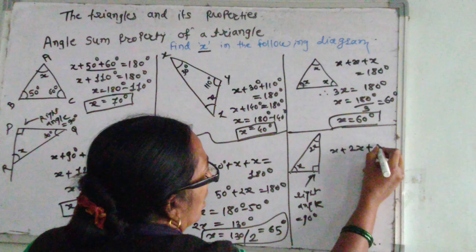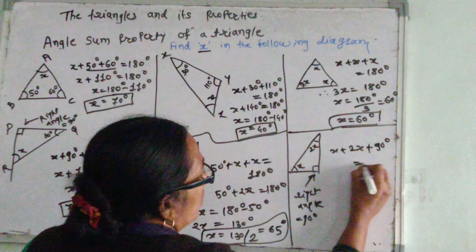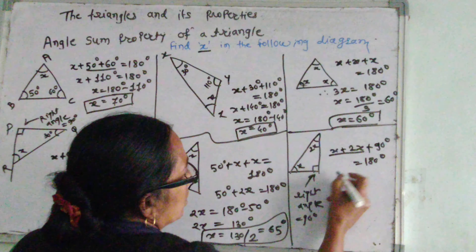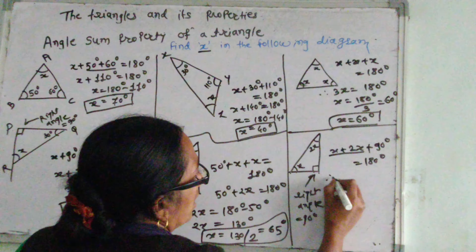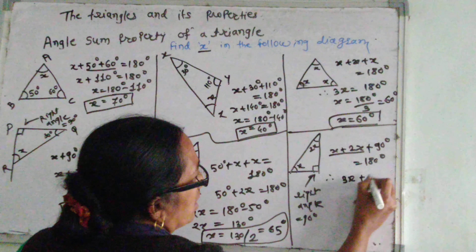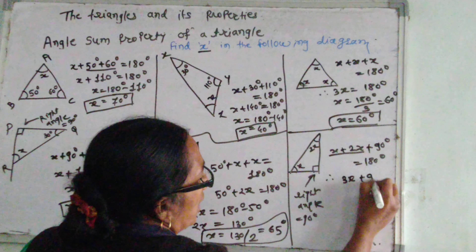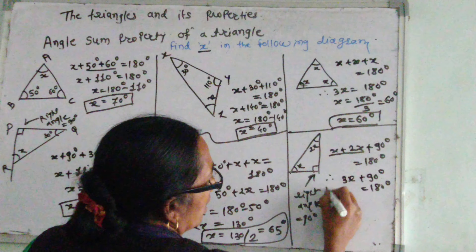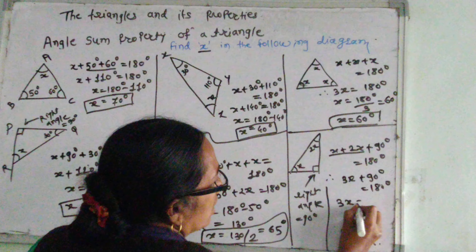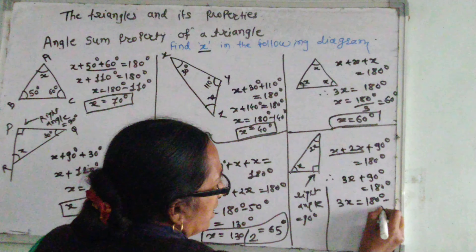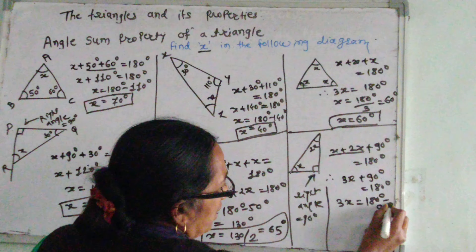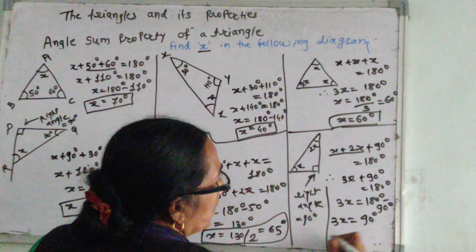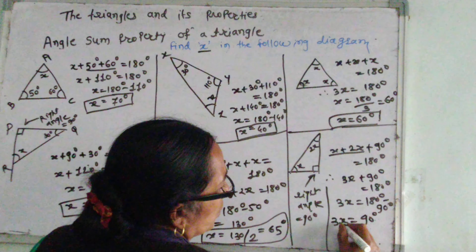50 plus X plus X equal to 180. 50 plus 2X equals 180. 2X equals 180 minus 50, equal to 130. X equals 130 divided by 2, equal to 65 degrees.